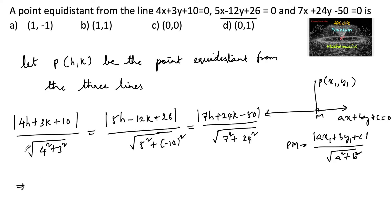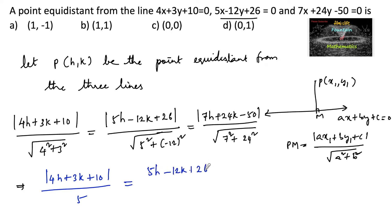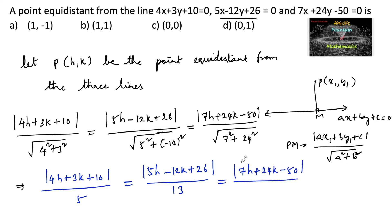Simplifying the denominators: 4² + 3² = 16 + 9 = 25, so √25 = 5; 5² + 12² = 25 + 144 = 169, so √169 = 13; and 7² + 24² = 49 + 576 = 625, so √625 = 25. This gives: |4h + 3k + 10| / 5 = |5h − 12k + 26| / 13 = |7h + 24k − 50| / 25.